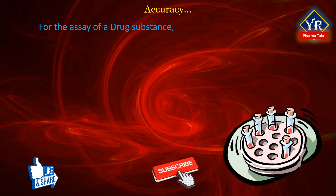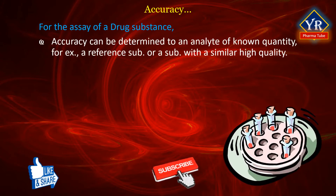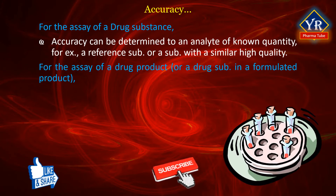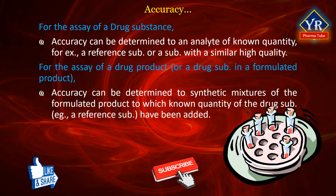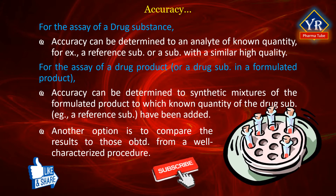For the assay of a drug substance, accuracy can be determined by application of the analytical procedure to a certified reference substance or a substance of similar high quality. If the reference standard is not available, comparison of the results to those obtained from another validated and well-characterized analytical procedure can be made. For the assay of a drug product, accuracy can be determined by application of the analytical procedure to synthetic mixtures of the drug-free formulated product to which known quantities of the drug substance — that is, a reference substance — have been added. Alternatively, the procedure can be applied to the drug product spiked with a known amount of the analyte. Another option is to compare the procedure results to those obtained from a well-characterized, recognized, or official procedure.